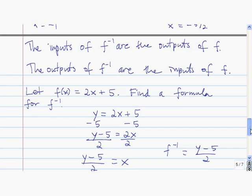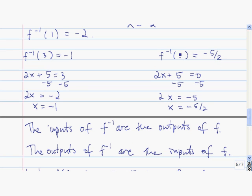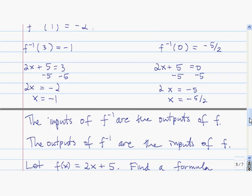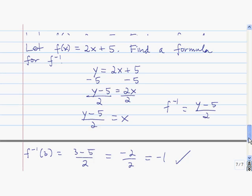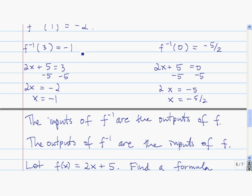Let's verify that it works by using our last two examples. We know that f inverse of 3 is negative 1. Let's use our formula to actually find f inverse of 3. According to our formula, to find f inverse of 3, we take that number 3 and plug it in for y. So 3 minus 5 divided by 2, that's negative 2 divided by 2, which is negative 1. So that works with the value that we just found.